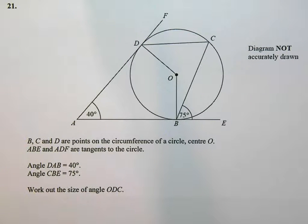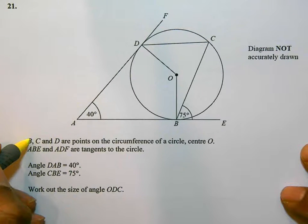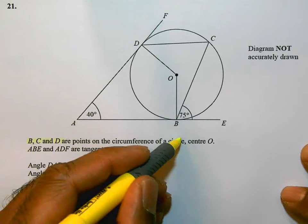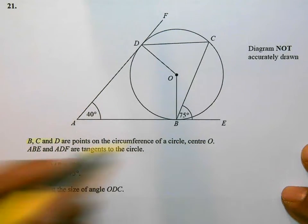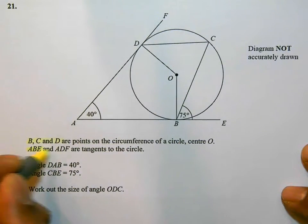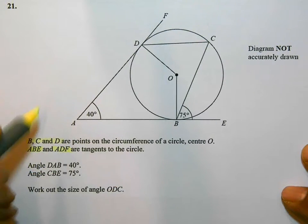This is question number 21 on the June 2014 non-calculator paper. The question says B, C and D are points on the circumference of a circle with center O. ABE and ADF are tangents.